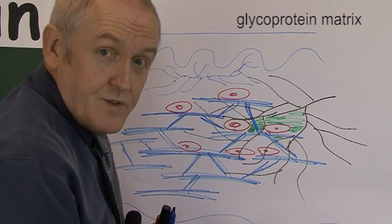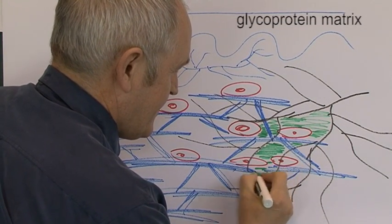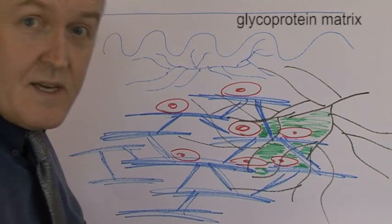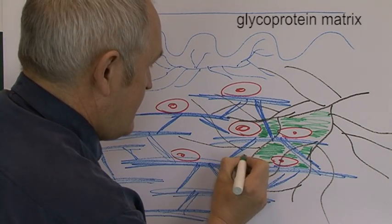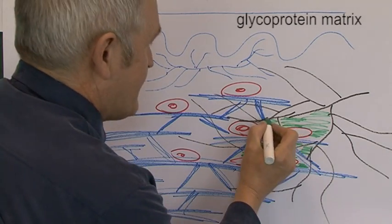Some people call this matrix. This glycoprotein substance is sometimes called matrix, and sometimes it's called ground substance, and it's filling in all of the gaps.